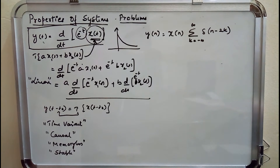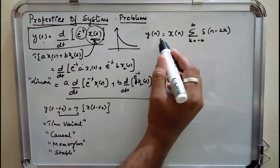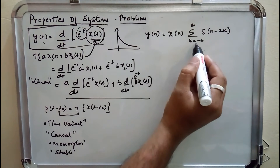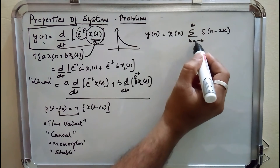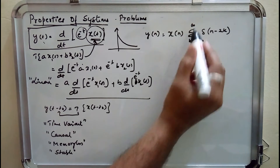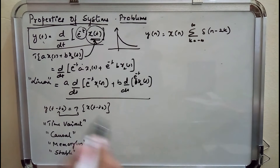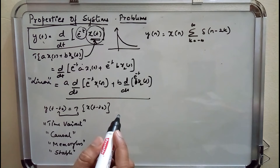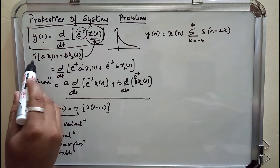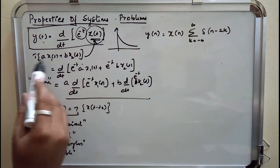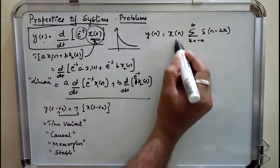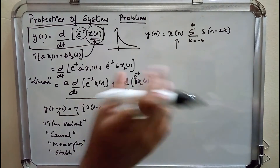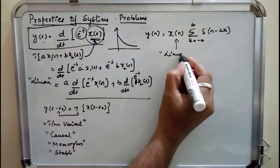Now the second problem: y(n) = x(n) · Σδ, where the summation ranges from k = −∞ to +∞. For the linearity property, replacing the input by a weighted sum of two or more signals, I get a·y1(n) + b·y2(n). So the system is linear in nature.